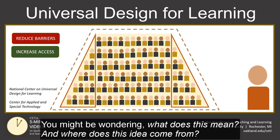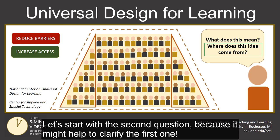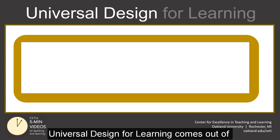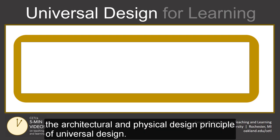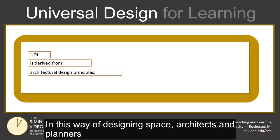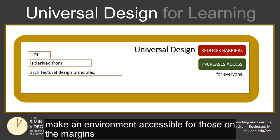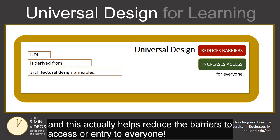You might be wondering, what does this mean, and where does this idea come from? Let's start with the second question, because it might help to clarify the first one. Universal Design for Learning comes out of the architectural and physical design principle of Universal Design. In this way of designing space, architects and planners make an environment accessible for those on the margin, and this actually helps reduce the barriers to access or entry for everyone.